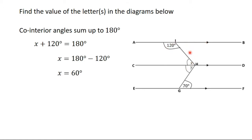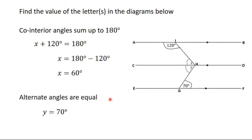So we've solved for X. Now we come to the lower part. We consider CD and EF with GH as our transversal, as if the top part does not exist. From here, we can see that Y and 70 degrees are alternate angles. We know that alternate angles are equal, so Y equals 70 degrees. All you need to do is look at the diagram carefully, recall the properties you know, and use the one that helps you solve the question.